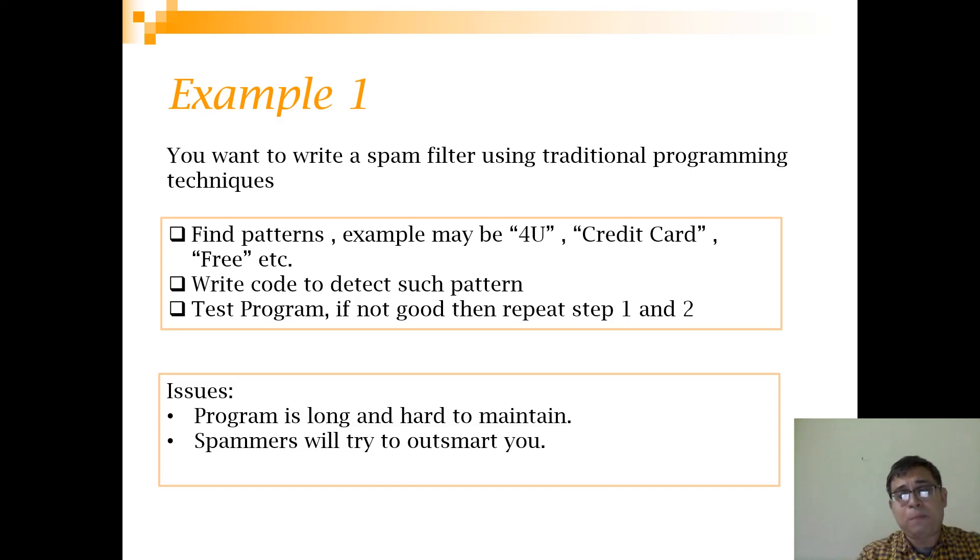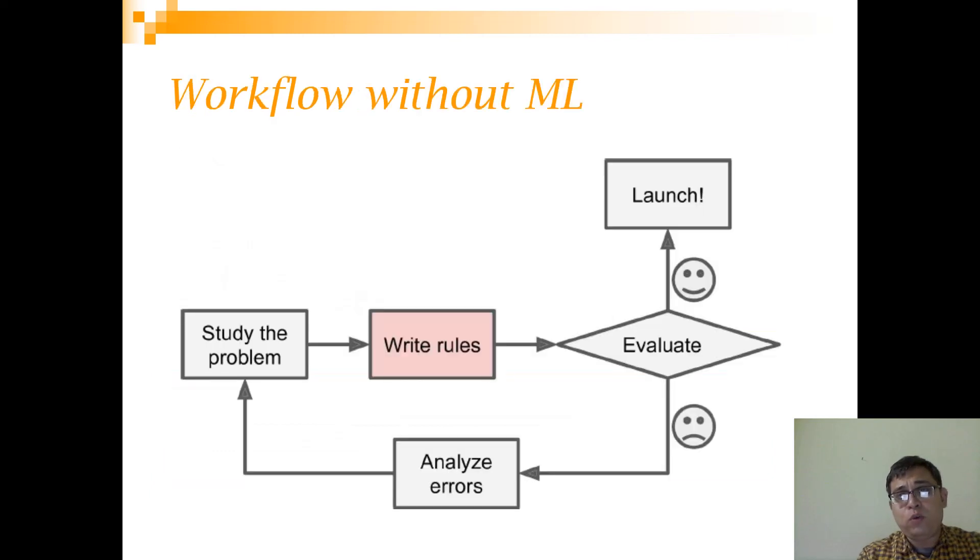If we do this traditional approach, what is the workflow that we will follow? We will study the problem and try to come up with these rules. What do these rules signify? How many times the word free appears, count the occurrence of the word discount. Then you evaluate, meaning you check emails from history and you know whether they are normal or spam, and you actually check that using these rules whether you are able to classify them correctly. Then you analyze the errors that how much error is there. Is it more than maybe 30 percent?